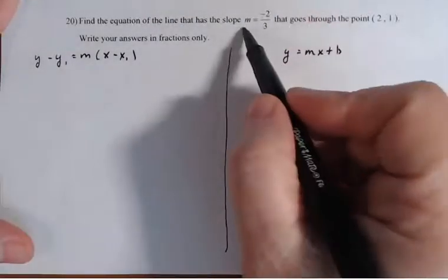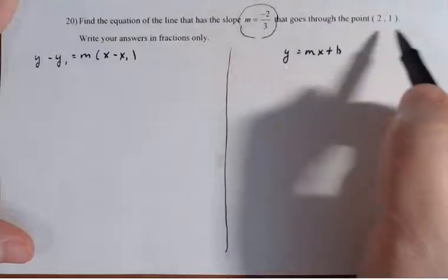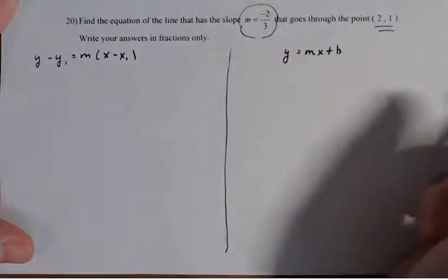But you can see that M is minus two thirds in both cases, and I have an ordered pair that I can use.